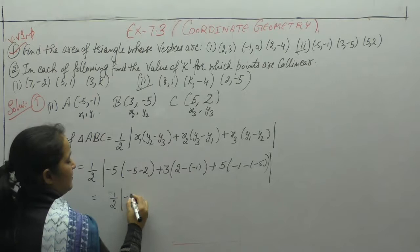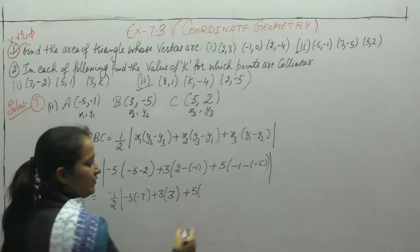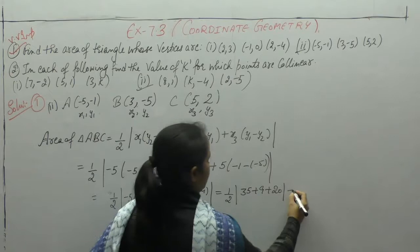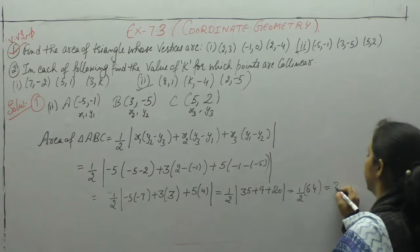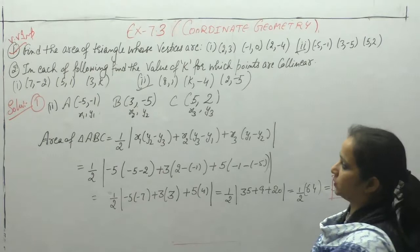Now putting values: 1/2 of (-5)(minus 5 minus 2) plus 3(2 minus minus 1) plus 5(minus 1 minus minus 5). That gives 1/2 of (-5)(minus 7) plus 3(3) plus 5(4), which is 1/2 of 35 plus 9 plus 20 = 1/2 of 64 = 32 square units. So area of triangle ABC with the given vertices is 32 square units.